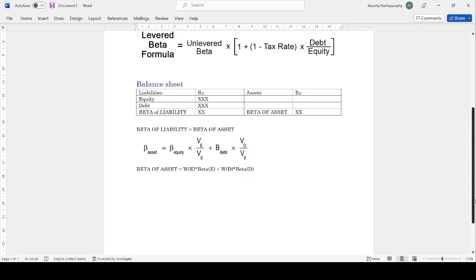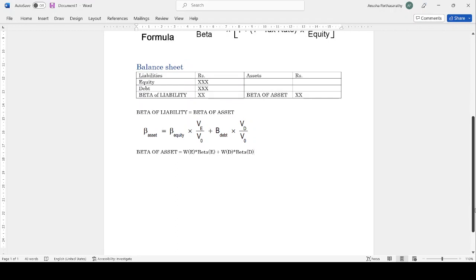To cut short this, we can write it as beta of asset equals beta of equity times weight of equity plus beta of debt times weight of debt.